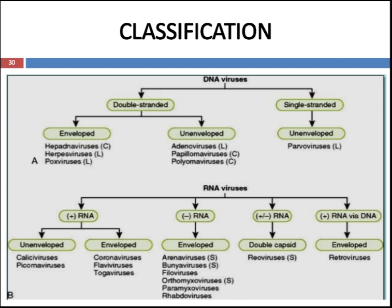RNA viruses are also divided into enveloped and unenveloped viruses. Unenveloped RNA viruses include caliciviruses and picornaviruses. Enveloped RNA viruses include coronaviruses, flaviviruses, and togaviruses. Negative-sense RNA viruses include arenaviruses, bunyaviruses, filoviruses, orthomyxoviruses, paramyxoviruses, and rhabdoviruses. Double-capsid plus-or-minus RNA viruses include reoviruses, and plus-sense RNA or DNA enveloped viruses include retroviruses.